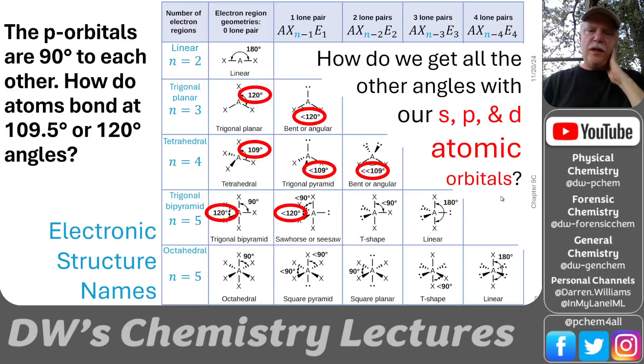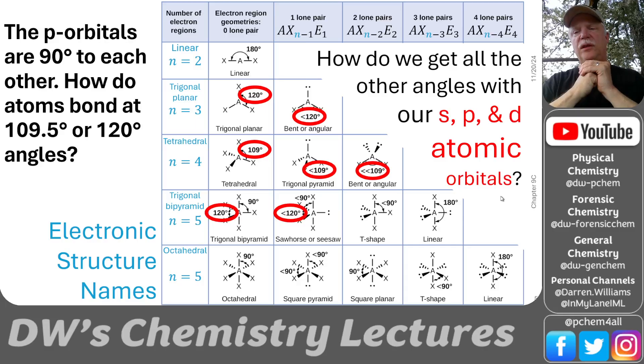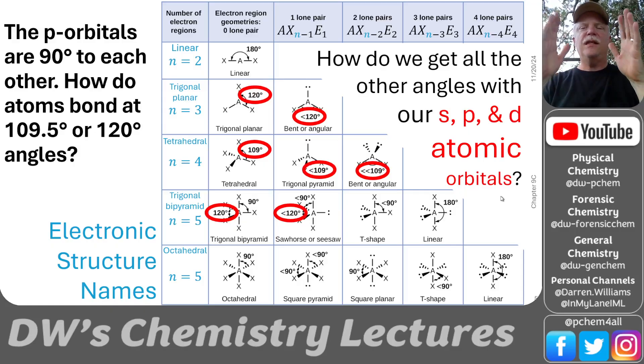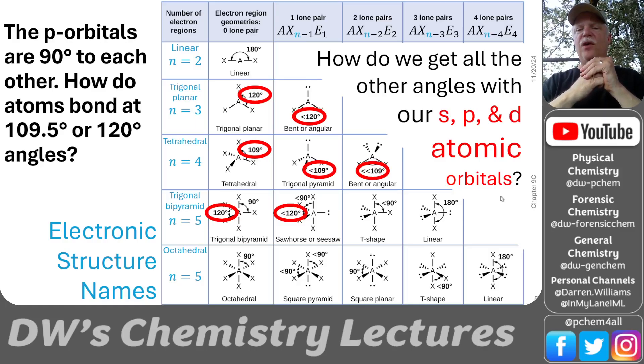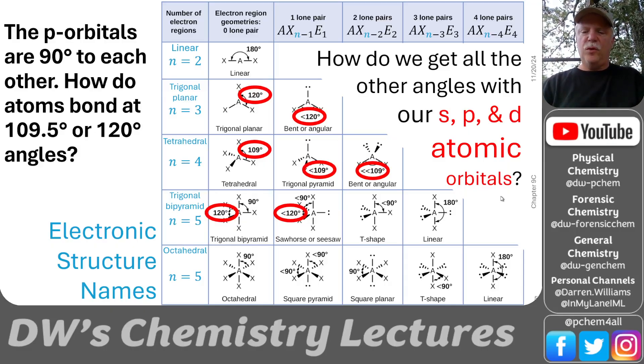When we did the valence shell electron pair repulsion theory in the last lecture, and we looked at the number of electron groups around a central atom, we came up with these distances or these angles that maximize the distance between these electron groups. But how do we actually get these other angles, the 120-degree angles, the 109.5-degree angles, if our p orbitals are at 90 degrees? That's what we're going to be talking about this morning. That's the hybridization idea of these atomic orbitals.